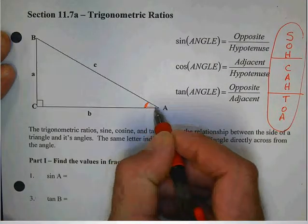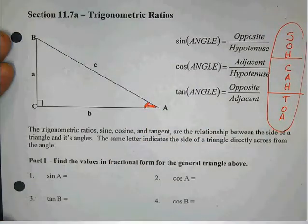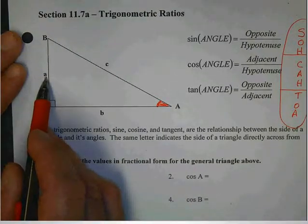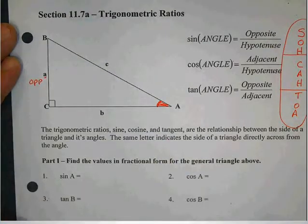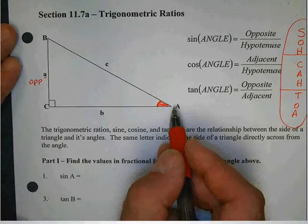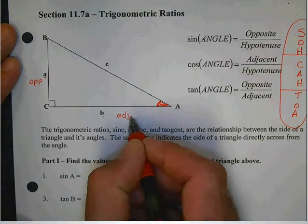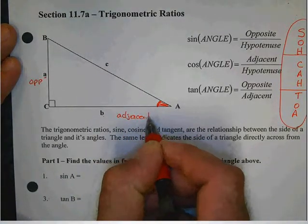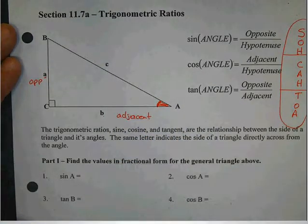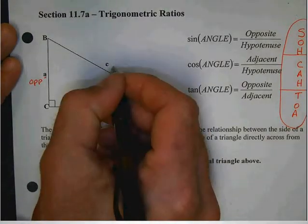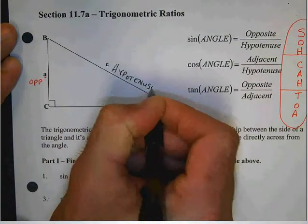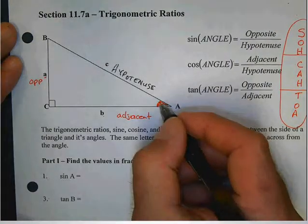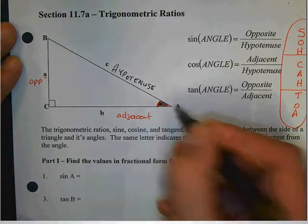If this is my angle A, I have labeled this side over here little a. And compared to this angle A, that would be called opposite. This side b, compared to this angle A, would be called adjacent. Adjacent means next to. And then the longest side in the triangle is always called the hypotenuse. So we have three sides of the triangle relating to angle A.